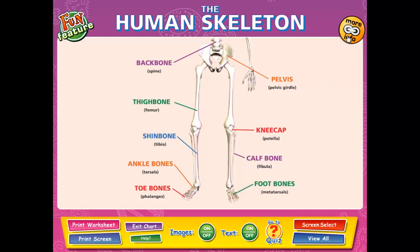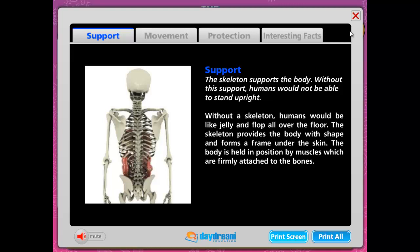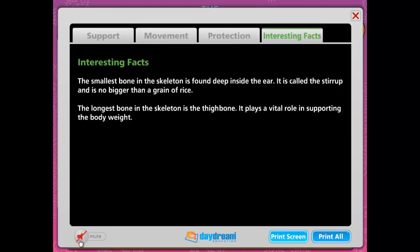We will now move on to the More Info feature, located in the top right-hand corner of the interactive chart. Clicking the button launches screens with additional in-depth information supplementing text, images, and animation. There is narration — for example, 'The skeleton supports the body; without this support, humans would not be able to stand upright' — allowing students to follow along. You can also mute the narration for students to read aloud in class. The additional notes can also be printed and used as a take-home study guide.